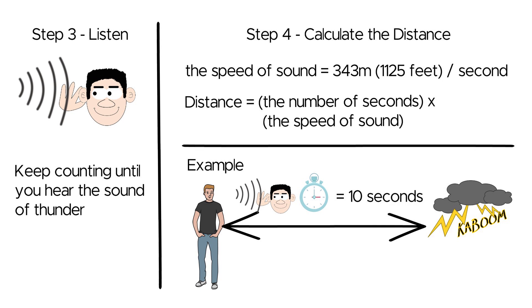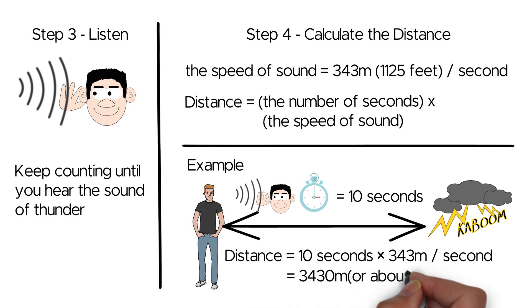Now, you'll use the speed of sound, which is 343 meters per second, to estimate the distance. Distance equals time times speed of sound, which is 10 seconds times 343 meters per second, and we can get 3430 meters, or about 3.43 kilometers.